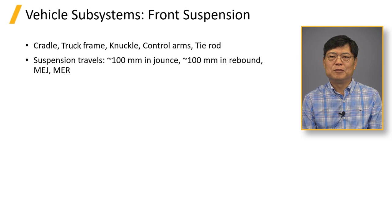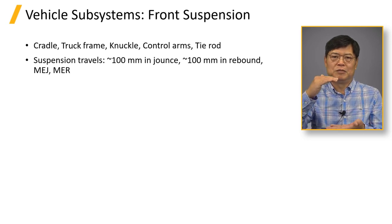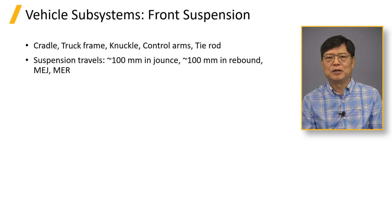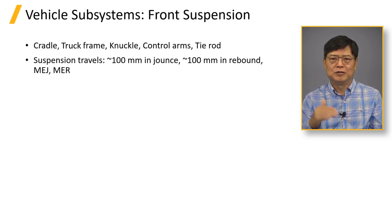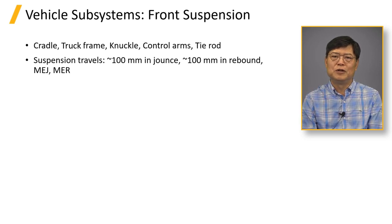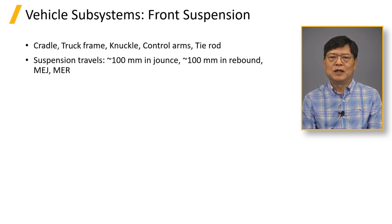The suspension in a passenger vehicle has about 100mm jounce travel and 100mm rebound travel. It's good to have longer travel for ride, but it is restricted to about 100mm by the bumpers.